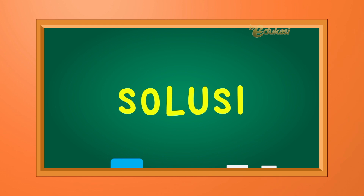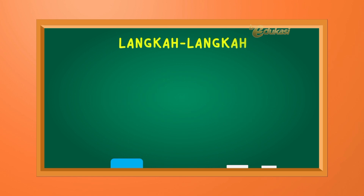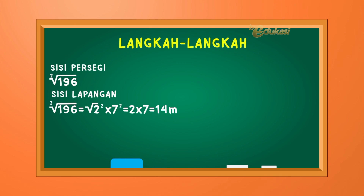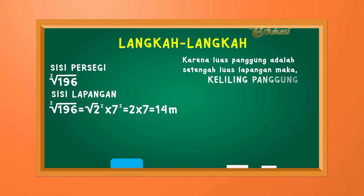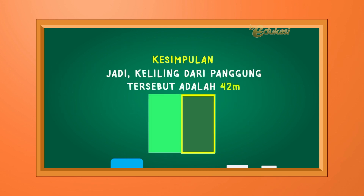Solusi. Informasi: luas lapangan sama dengan 196 meter persegi. Setengah dari lapangan tersebut dipakai untuk panggung. Langkah-langkah: sisi persegi sama dengan akar pangkat dua dari 196. Akar pangkat dua dari dua kuadrat dikali tujuh kuadrat sama dengan dua kali tujuh sama dengan 14 meter. Karena luas panggung adalah luas setengah lapangan, maka keliling panggung sama dengan 2 dikali dalam kurung 14 meter ditambah 7 meter, sama dengan 42 meter. Jadi, keliling dari panggung tersebut adalah 42 meter.